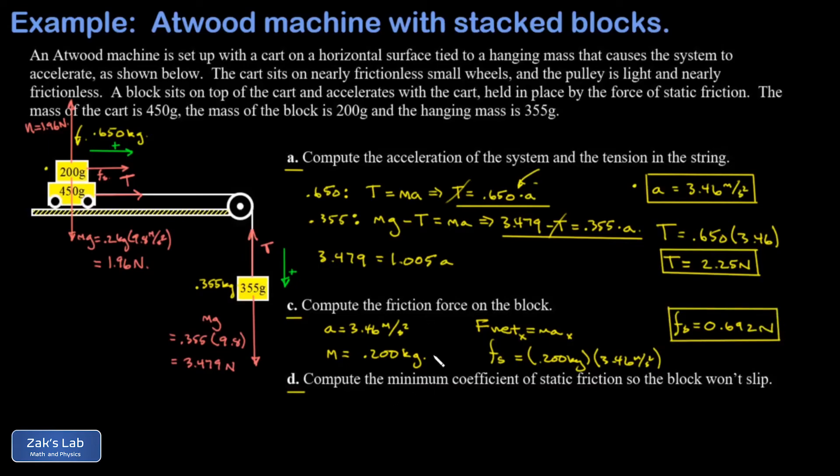Finally, in part D, we're asked to get the minimum coefficient of static friction so the block won't slip. So if we pull too hard on that cart, it'll slip out from underneath that block, just like pulling out the tablecloth from beneath the dishes. We're trying to figure out how big does that static friction coefficient have to be? To keep this thing locked in place, accelerating with the cart.